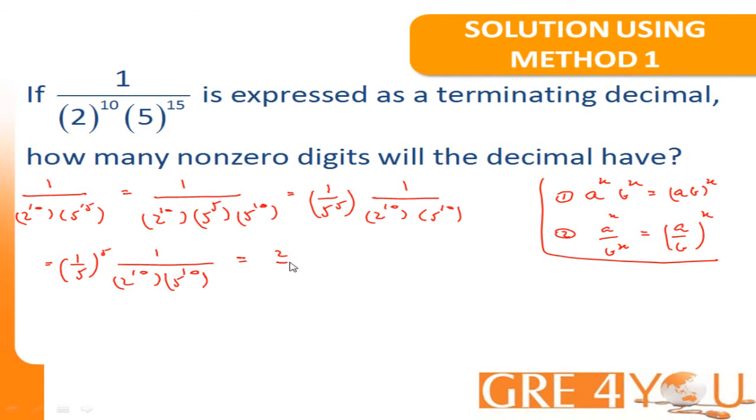1 over 5 can be rewritten as 2 over 10. And I keep the exponent of 5 over there. Times 1 over 2 to the 10 times 5 to the 10 is a 10 to the 10. And now, I can use exponent rule number 2 again and split this up as 2 to the power 5 divided by 10 to the power 5 times 1 over 10 to the power 10.